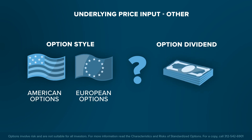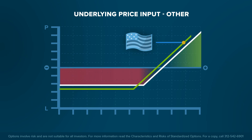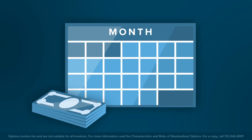Option style determines when an option can be exercised. American style options can be exercised at any time prior to, up to, and including the day of expiration, while European style options can only be exercised at expiration. All models in these lessons assume American style options, which is the most common type of US option. Dividends tend to affect an option's price most when there are changes in the dividend amount, and around ex-dividend dates due to the value of the dividend upon exercise up until the ex-dividend date.